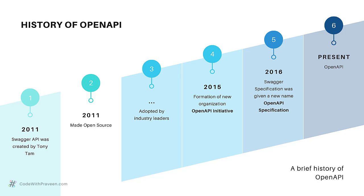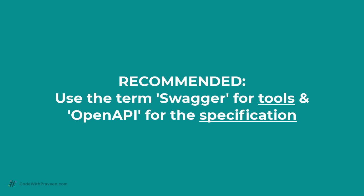Due to this transition of the name from Swagger API to OpenAPI, the terms Swagger and OpenAPI are being used interchangeably by many people. However, going forward, the right way is to use the term Swagger for tools and the term OpenAPI for the specification. Hence, the API specification will be referred to using the term OpenAPI throughout this course. I recommend you to do the same when you communicate with others.